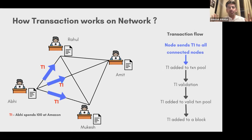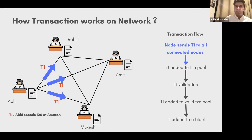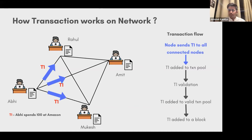Let's take a transaction example: Abhi spends 100 rupees at Amazon, which is accepting Bitcoin as currency. Once I do a transaction, how does everybody know about it? In a peer-to-peer network, a transaction is not valid unless everybody knows about it. So I send the transaction to Mukesh, Rahul, and Amit — essentially to everyone on the network. That's step one: node one sends transaction T1 to all connected nodes.